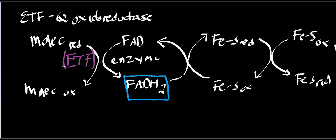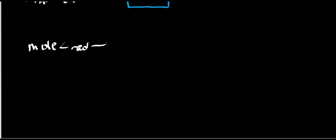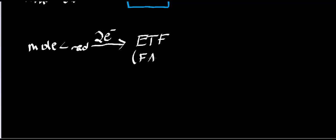The actual transfer of electrons from the reduced molecule to FADH2 occurs via an electron-transferring flavoprotein. The electrons from that reduced molecule move to an electron-transferring flavoprotein — specifically two electrons, because two are being transferred from the oxidation. The electron-transferring flavoprotein is a flavoprotein dependent on FAD, so these two electrons go to FAD and generate FADH2. The prosthetic group for the ETF is FAD, and it gets reduced to FADH2.